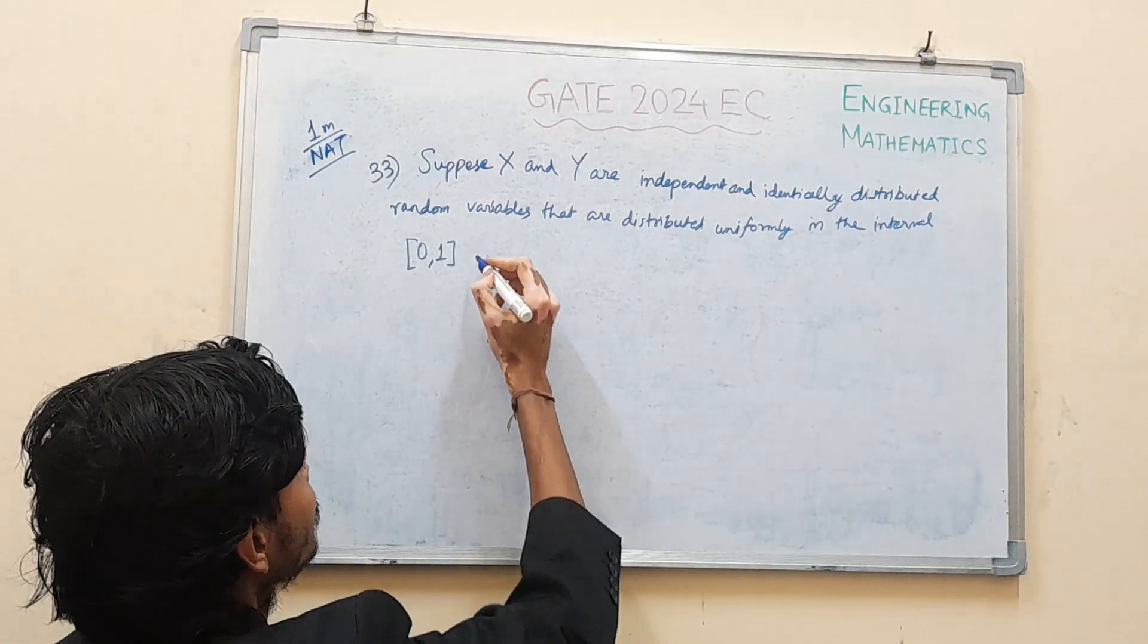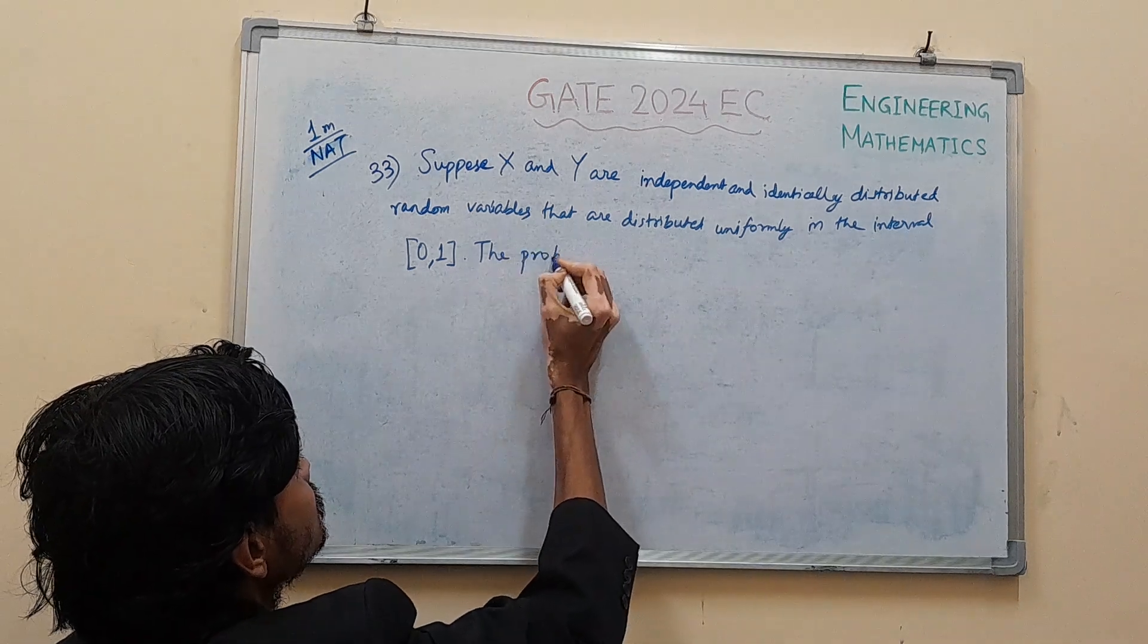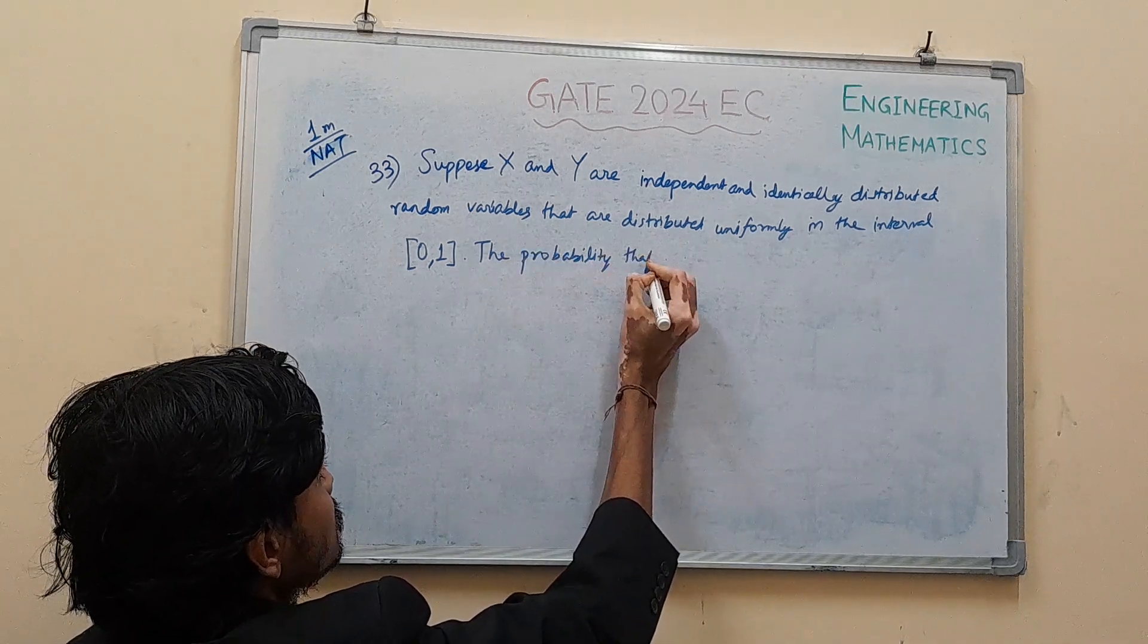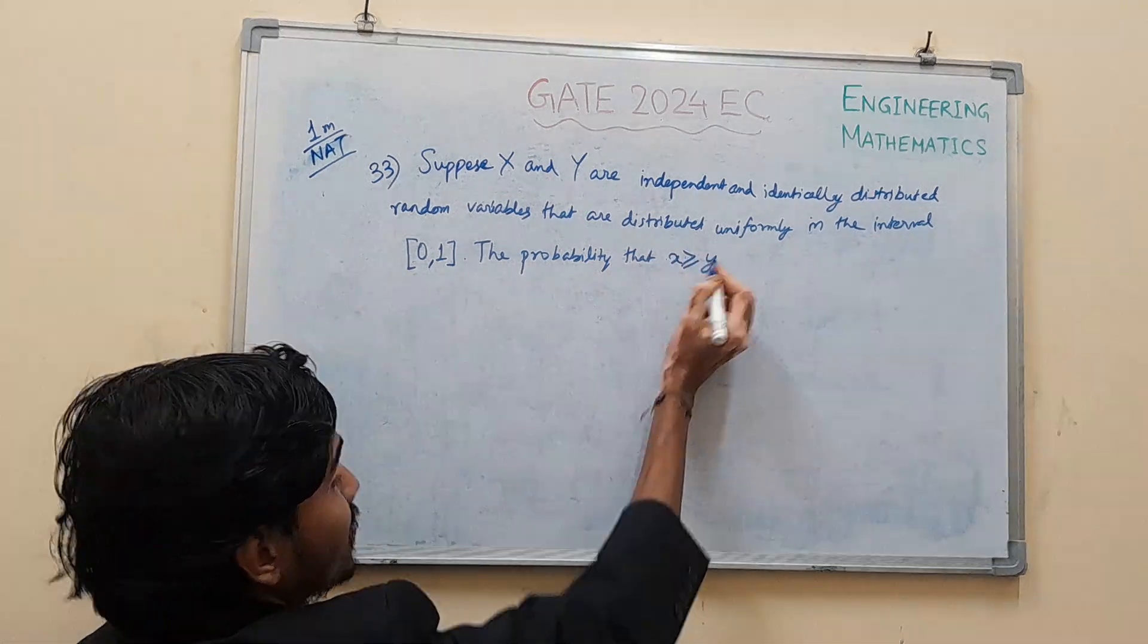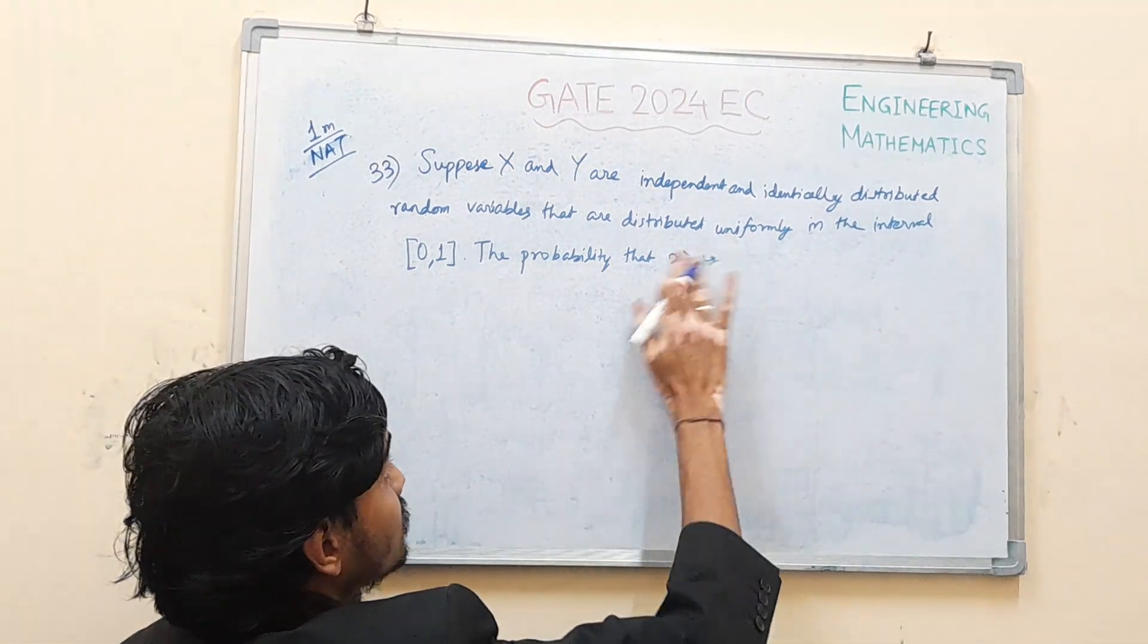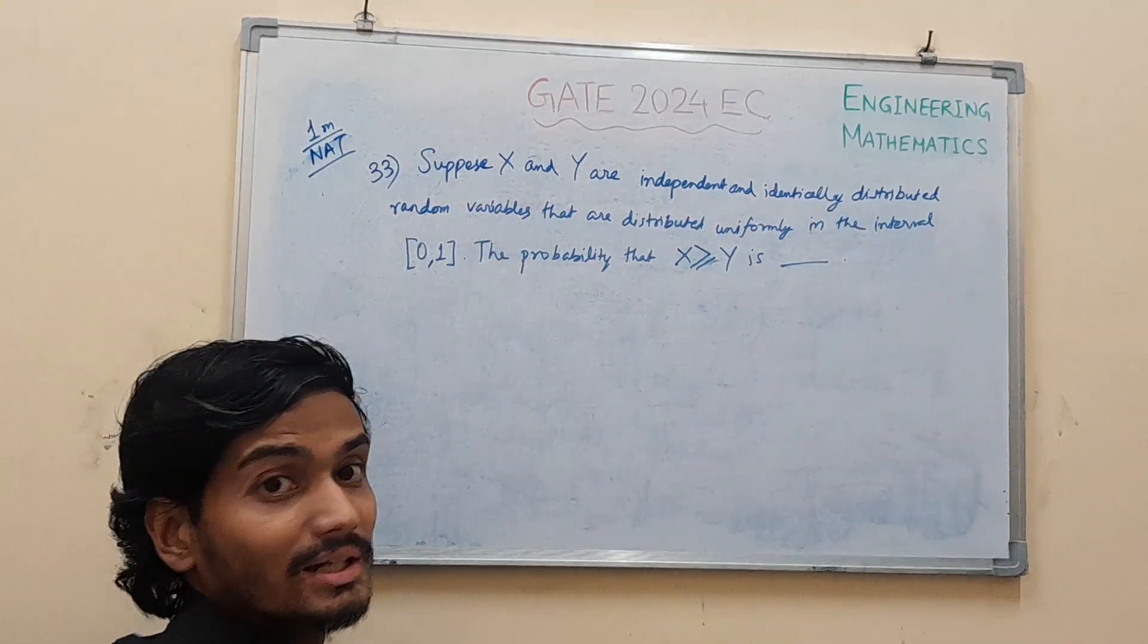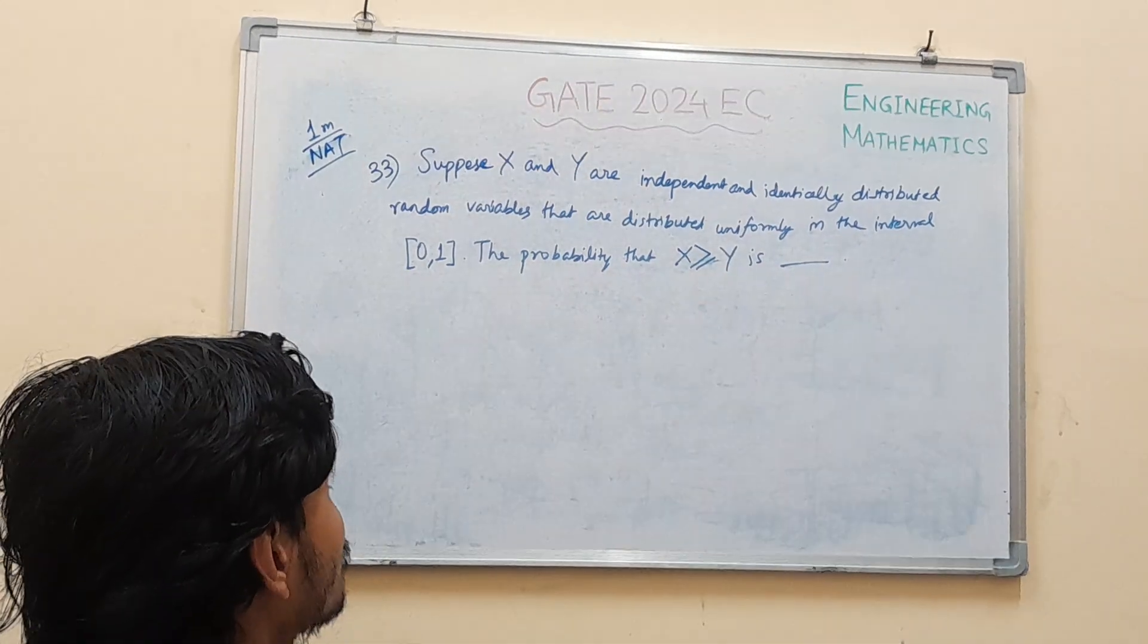The probability that X greater than equal to Y is the probability that you have to answer. X greater than equal to Y.